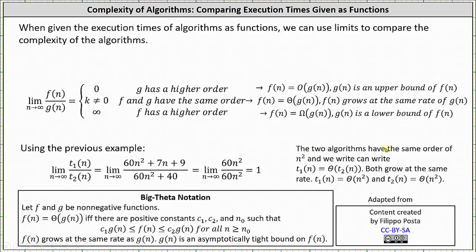We can say the two algorithms have the same order of n squared. We can also write that t sub one of n is Big Theta of t sub two of n — both grow at the same rate — and we can also state that t sub one of n is Big Theta of n squared, and so is t sub two of n.